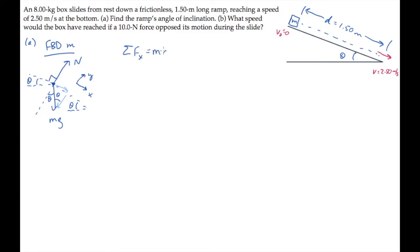Newton's second law tells us that if we add up all the forces in the x-direction, it equals mass times acceleration in that direction. There's only one force with a component parallel to the ramp, and that's this component here that I'll circle in red.